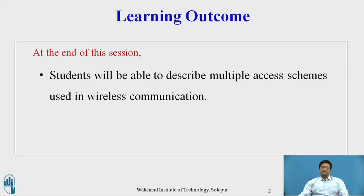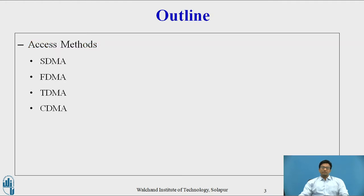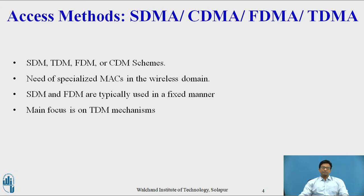The learning outcome is: students will be able to describe multiple access schemes used in wireless communication. In this we are going to see what is space division multiplexing, time division multiplexing, frequency division multiplexing, and code division multiplexing. To regulate user access to a medium we need SDM, TDM, FDM, and CDM schemes.